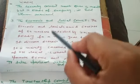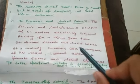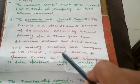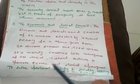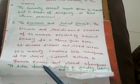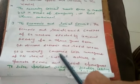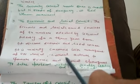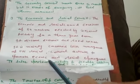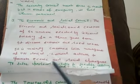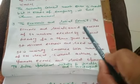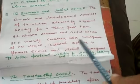It discusses economic and social issues. Economic and Social Council, jaisa ki naam se spasht hai, ye samajik aur aarthik muddon par discussion karta hai. It is mainly concerned with the management of UN social and cultural activities to promote economic and social progress — taaki sabhi member countries ka economic aur social development ho sake.